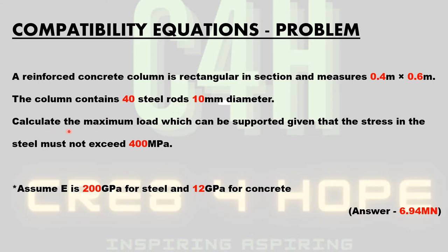We're tasked to calculate the maximum load which can be supported by the column, given that the stress in the steel must not exceed 400 megapascals. We have to assume that E for steel measures at 200 GPa, and the Young's modulus for concrete measures at 12 GPa. We are expecting an answer of approximately 6.94 mega newtons.